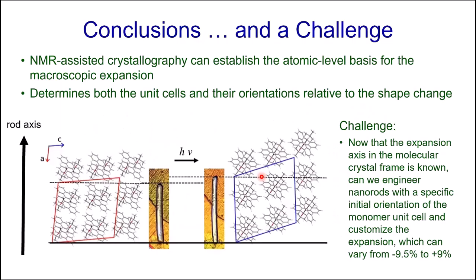To conclude this part: NMR-assisted crystallography can establish the atomic level basis for macroscopic expansion, but you have to determine both the unit cells and their orientations relative to the shape change. The challenge going forward is: now that we know the atomic level expansion axis, can we tailor the initial orientation of unit cells relative to the nanorod to engineer custom expansions? People are indeed working on methods like molecular lathes to do just that.